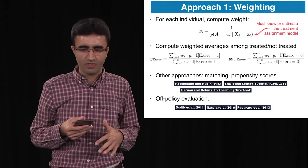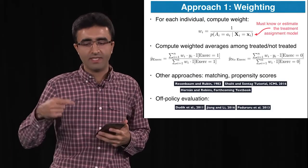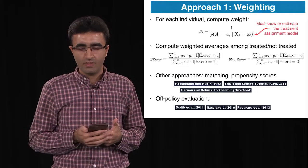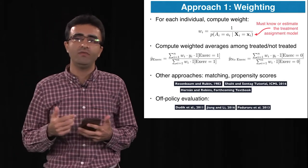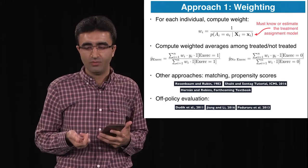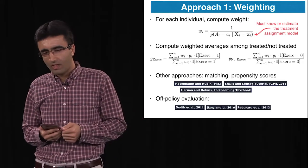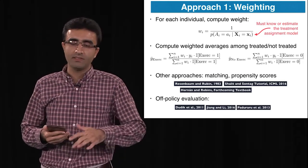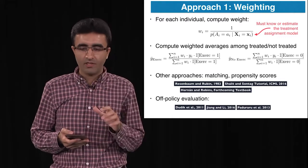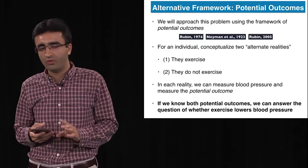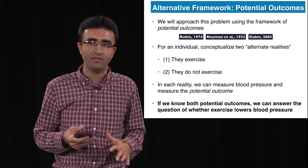We compute the probability of assigning treatment for each person and take the inverse of that probability as the weight for that individual — omega_i is that inverse probability of treatment assignment. We assume we either know this distribution or can estimate it. However, this method could have very high variance, so an alternative is the potential outcomes framework, which is the approach we will take in this talk.